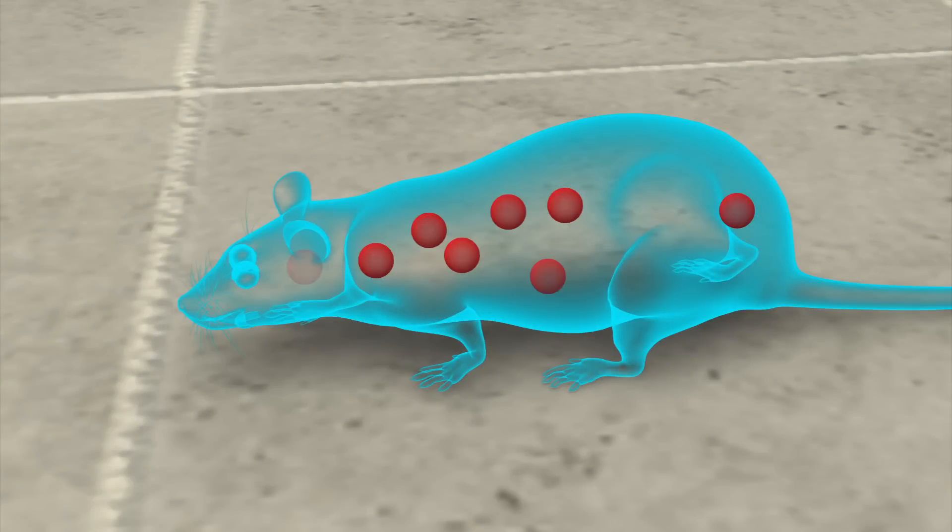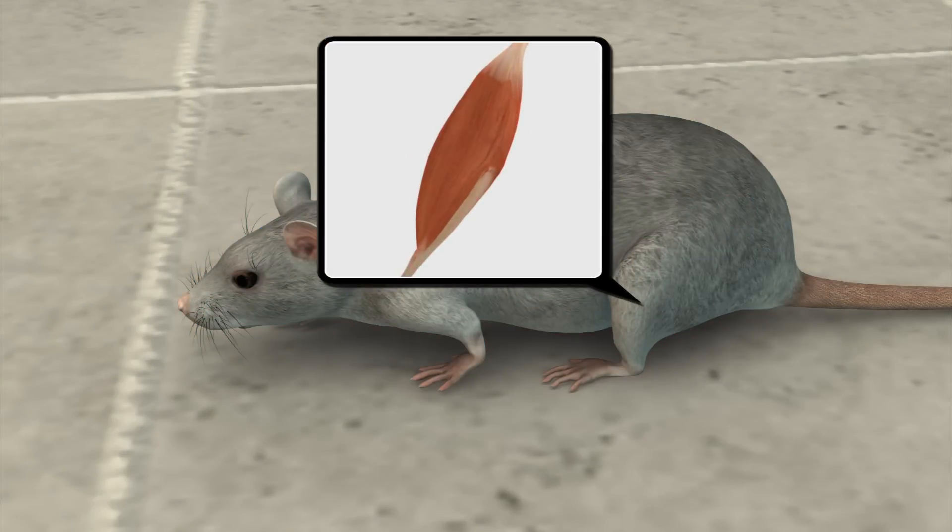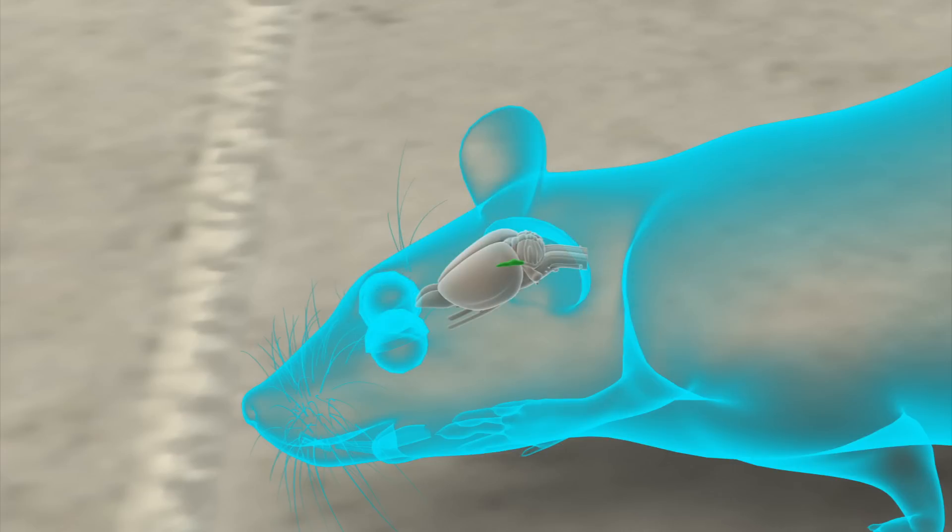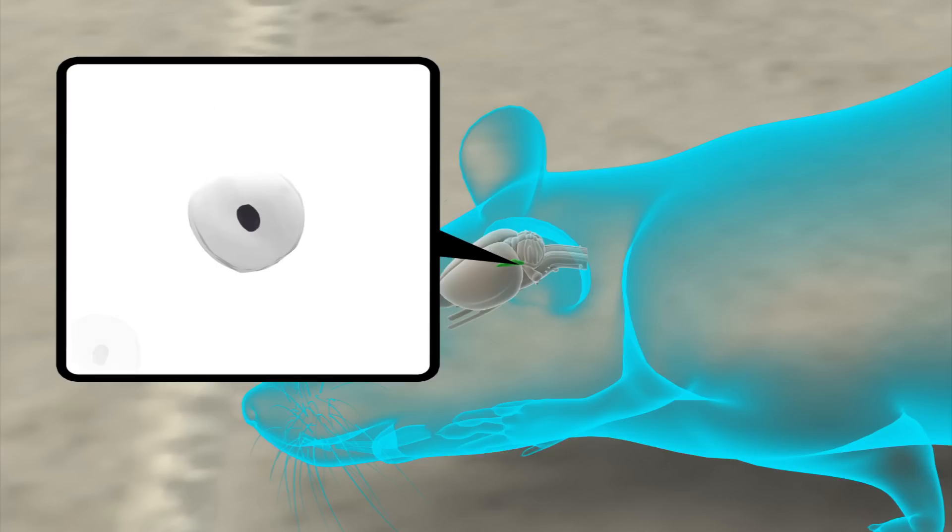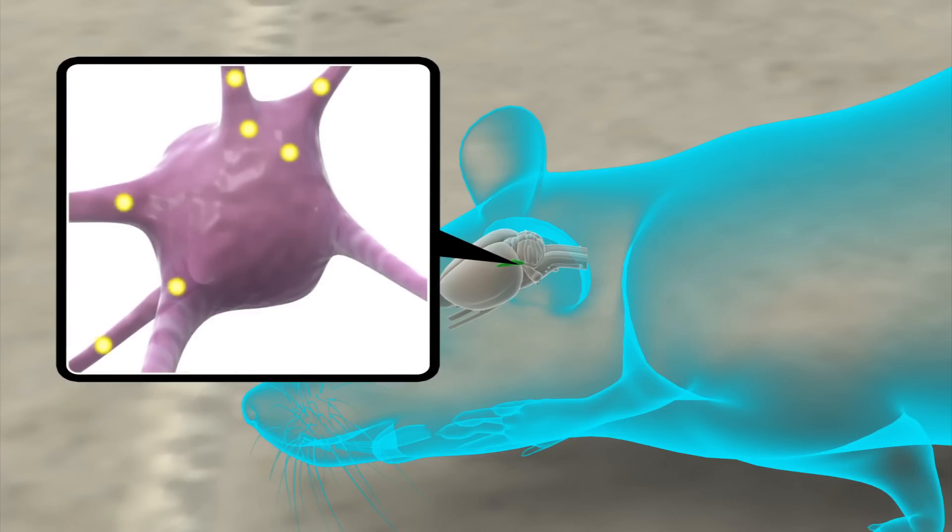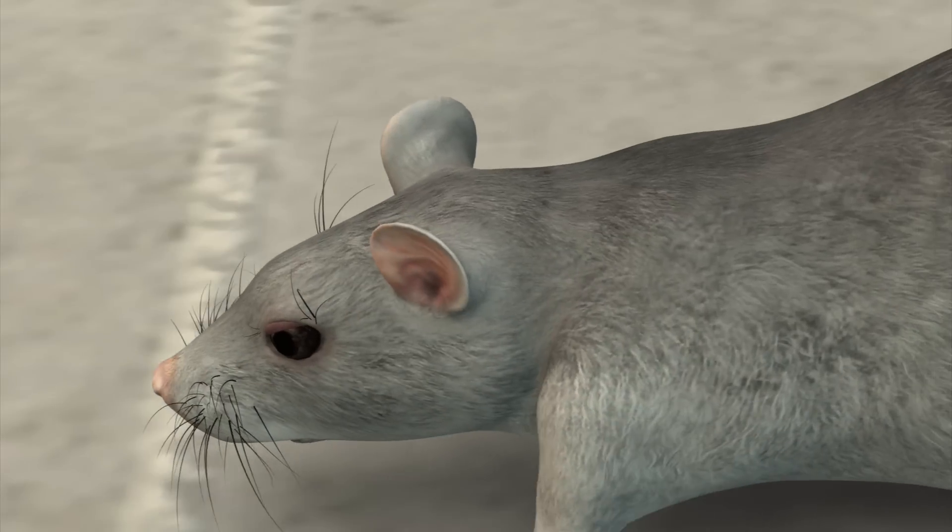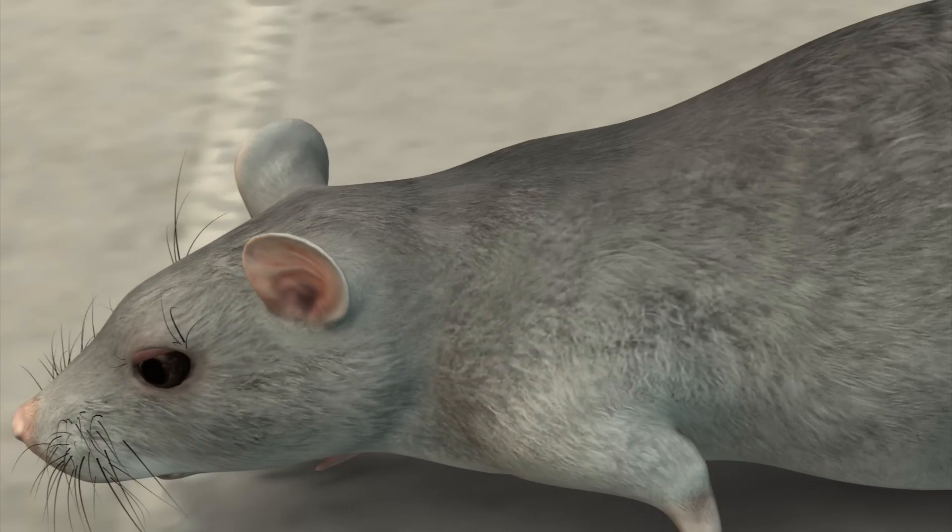The results showed that GDF11 rejuvenated muscles and brain function. New connections were observed forming in the hippocampus, indicating that young blood could stimulate the growth of brain stem cells and new neurons. The data indicate that injecting young blood could rejuvenate synaptic plasticity and improve cognitive function.